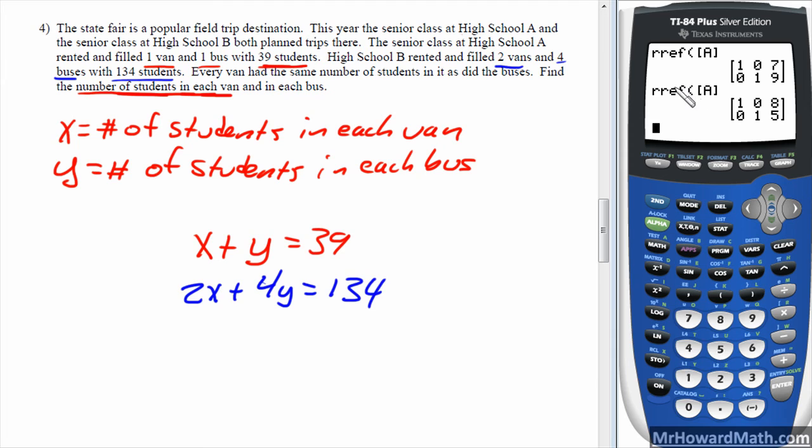I'm going to go through all the steps. I could go up here and highlight the rref and hit enter, and it would give me the answer. But I did that last time, so we'll go through all the steps. We did edit, now we do math, alpha apps, back into matrix again. We did edit, we did math, now we do names. So just enter twice, so 11 and 28, so the ordered pair, 11 comma 28. So that means the number of students in each van is 11, and the number of students in each bus is 28.